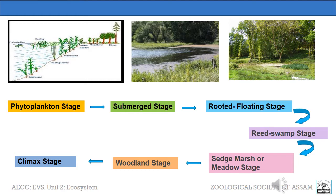In Hydrosere, the steps are: phytoplankton stage, submerged stage, rooted floating stage, reed swamp stage, sedge meadow stage, woodland stage, and climax stage. A wetland or a bill, which is a transitional area between open fresh water and dry land, provides a good example of this and is an excellent place to see the several stages of Hydrosere at a time.